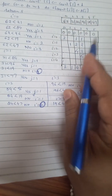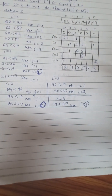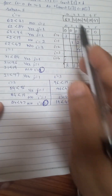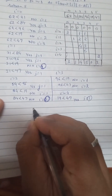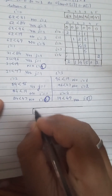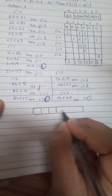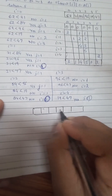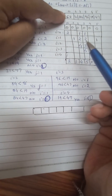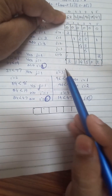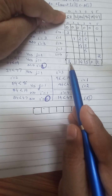Now we use these values to write the sorted array. We create a new array with 6 positions. 62 is at index 0 with count value 3, so we place it at position 3.